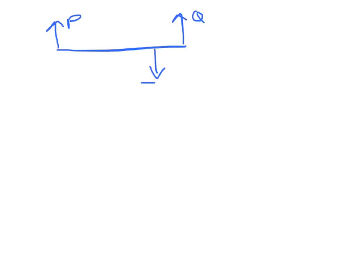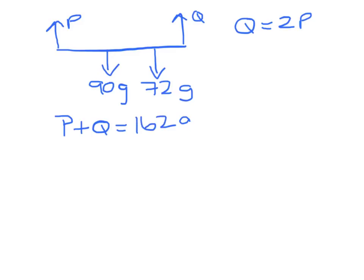The weight of the man acting down 72g and the weight of the plank acting down 90g. We're told in the question that the reaction at Q is twice the reaction at P. Using equilibrium, the up forces P and Q have to equal the down forces, 90g plus 72g, which is 162g.